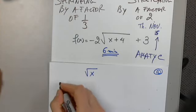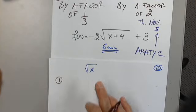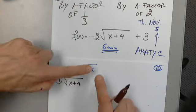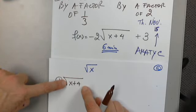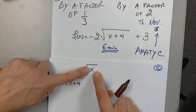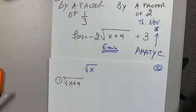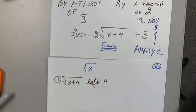The first transformation is on the square root of x. The square root of x plus four — am I changing x or am I changing y? I'm changing x into x plus four, which means a horizontal shift. So this is left four.